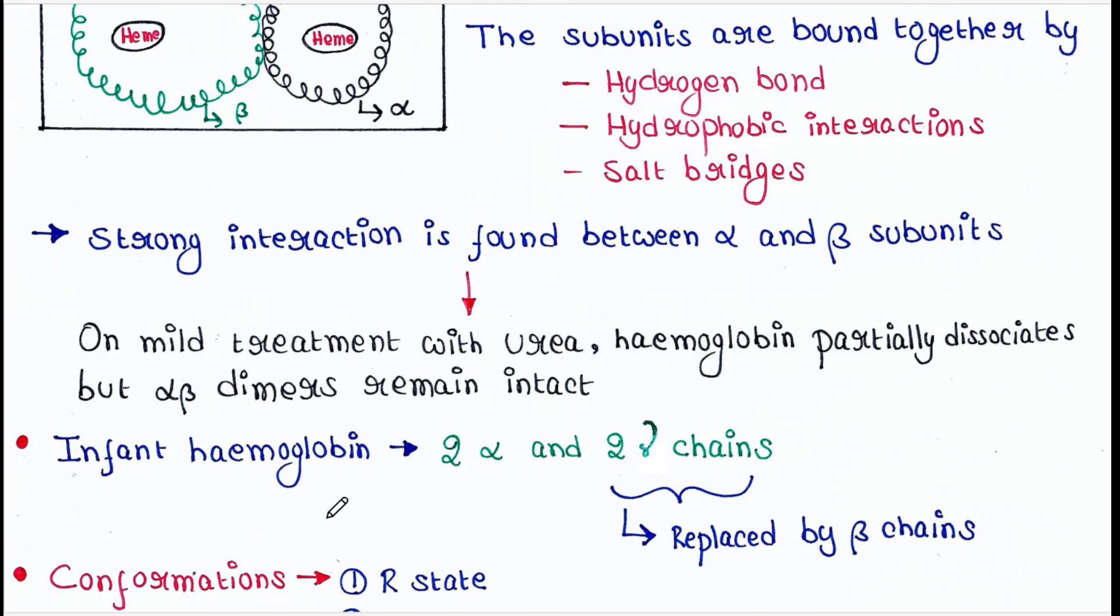Infant hemoglobin contains two alpha and two gamma chains. These two gamma chains are replaced by beta chains in adults.